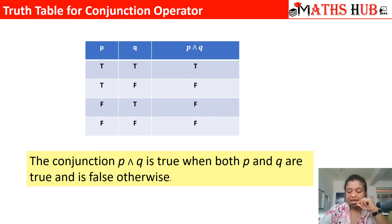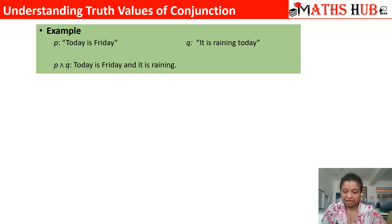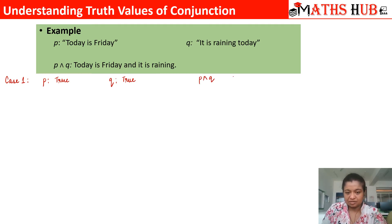Let us understand this truth table using our earlier example — 'today is Friday and it is raining' — to see how we get true, false, false, and false. Case 1: both p and q are true, meaning today is Friday and it is also raining. Since both conditions hold, p and q is true.